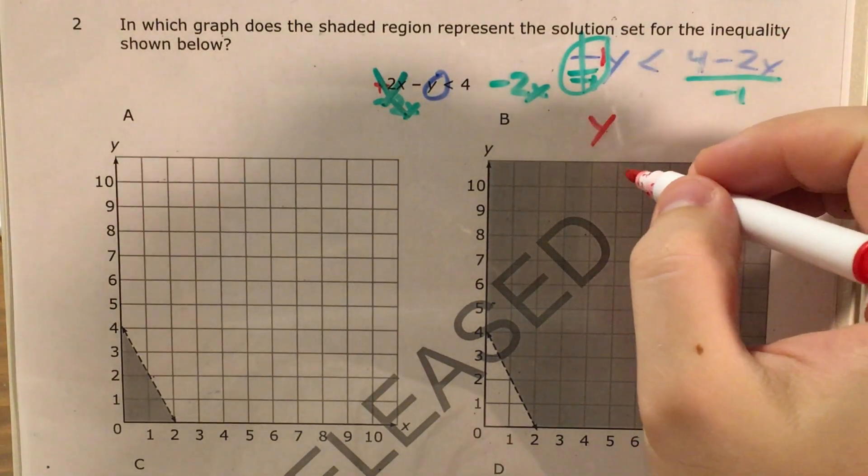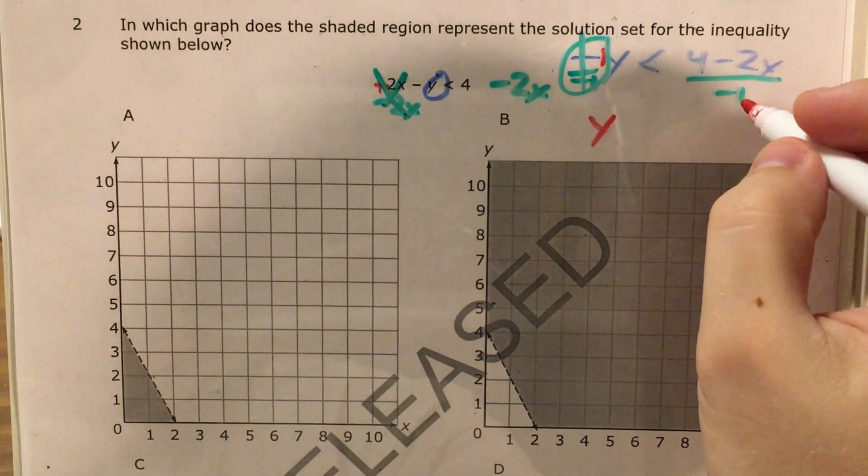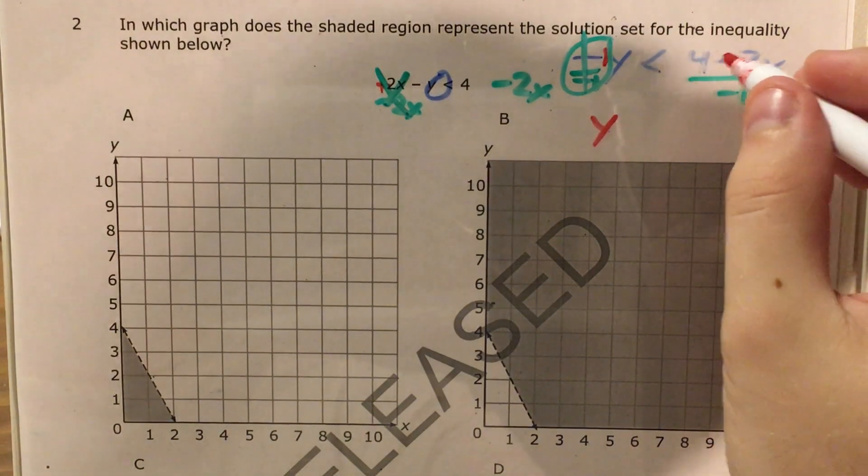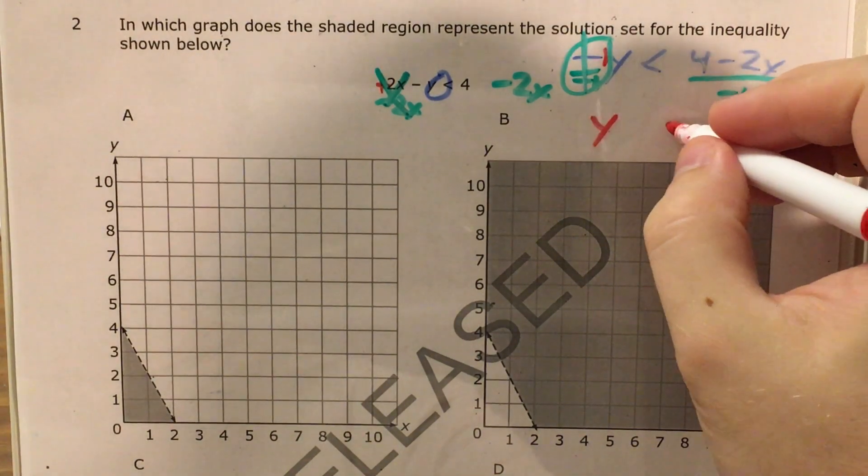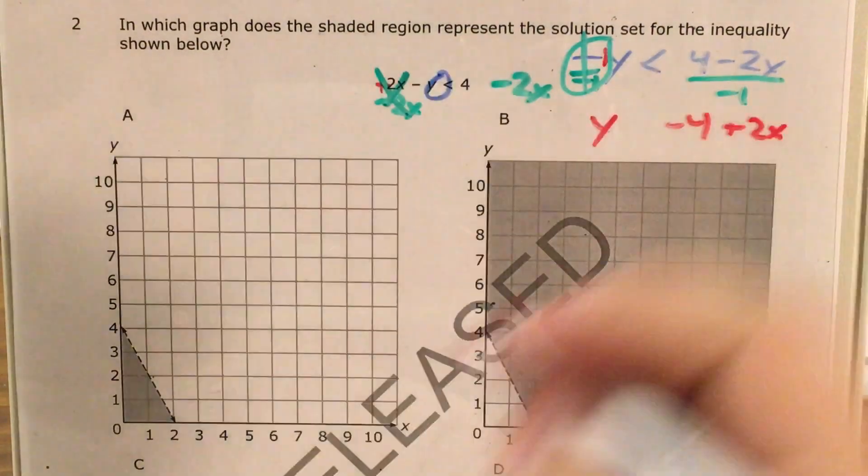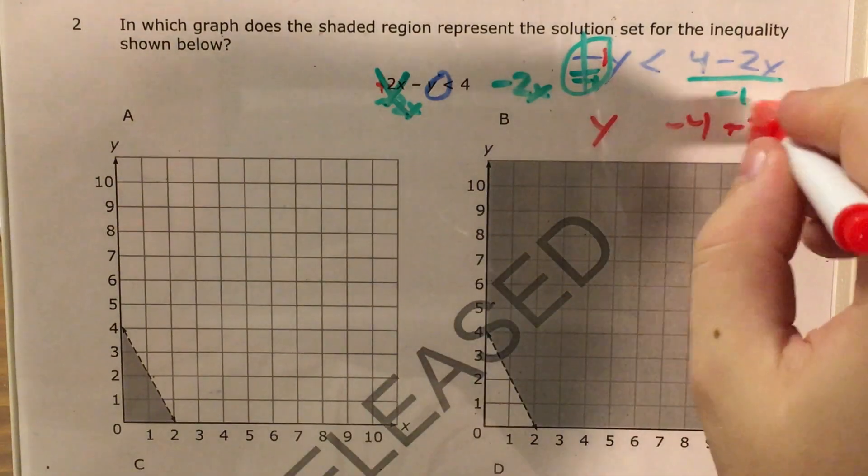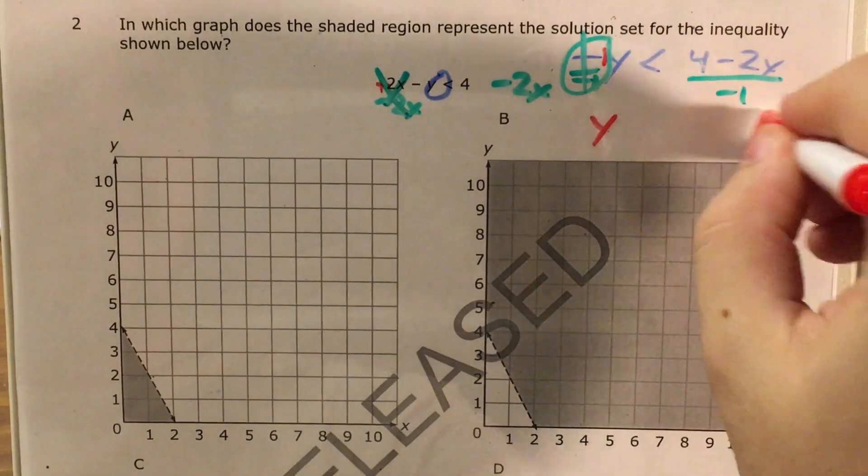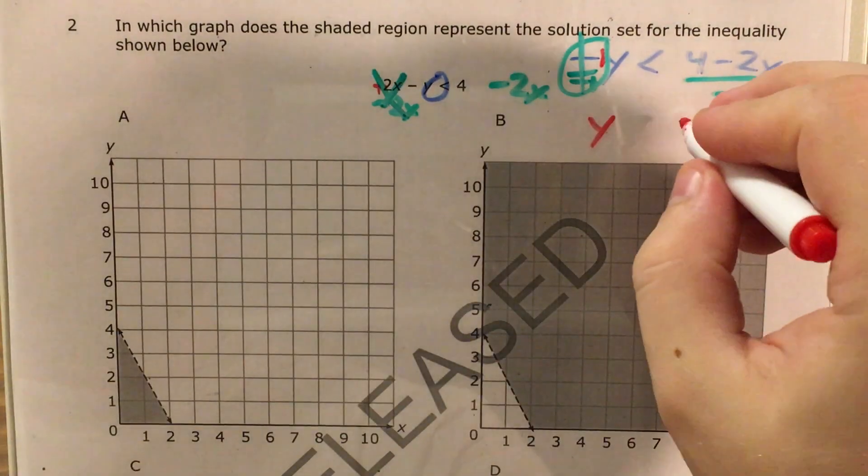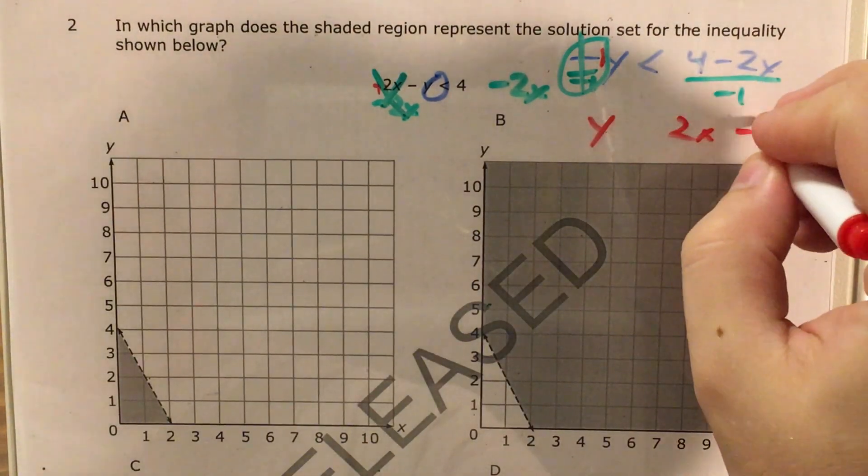I'll go ahead and write out the last form of my linear inequality. So I have y on the left side. And on the right side, dividing by negative 1 is the same thing as just changing everything positive to negative and negative to positive here. So 4 will become negative 4. And then negative 2x will become positive 2x. And then I'll go one step further and rewrite this so that it looks a little more familiar, a little more like something in slope-intercept form, and call it 2x minus 4.